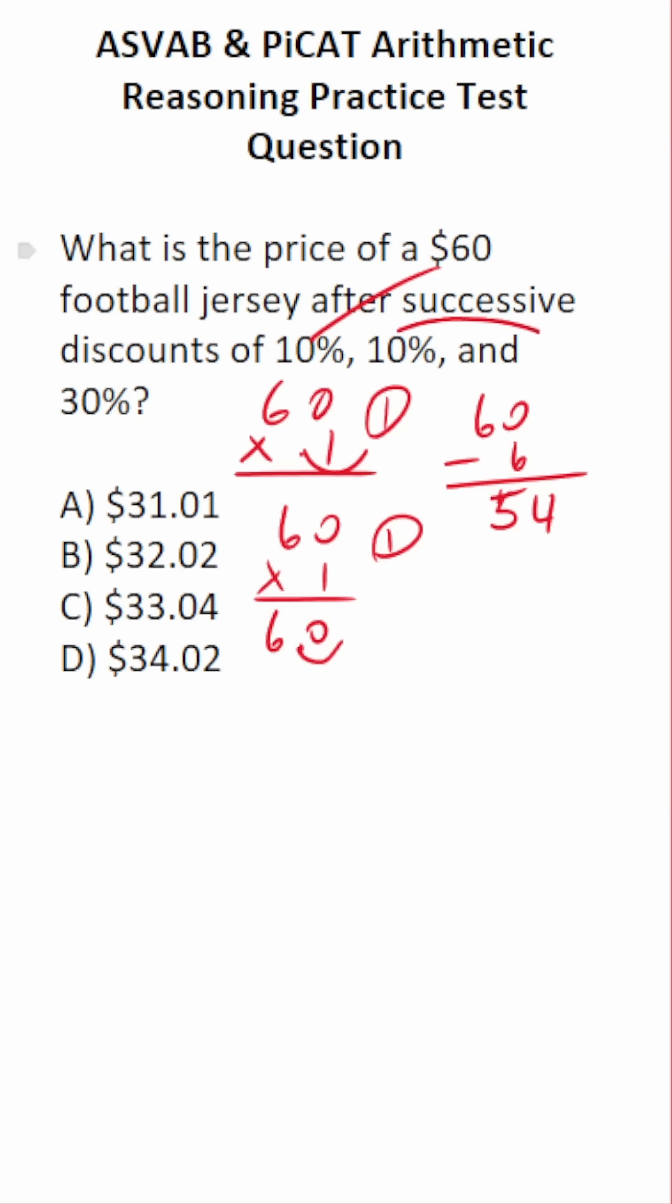Now we've got to do a 10% discount on $54. Most of you would be able to say that's $5.40, but if you couldn't say that mentally, do 54 times 0.1. 0.1 is the decimal equivalent of 10%.